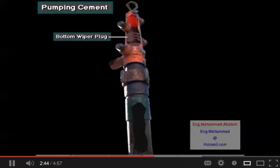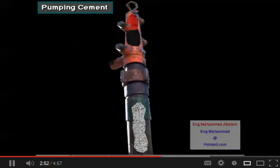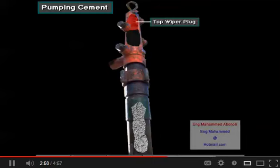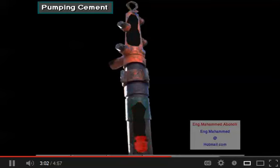The bottom plug goes into the casing first. It wipes mud off the inside of the casing and separates the mud from the cement. The top plug follows the last of the cement into the casing. It wipes cement off the inside of the casing and separates cement from the displacement fluid.